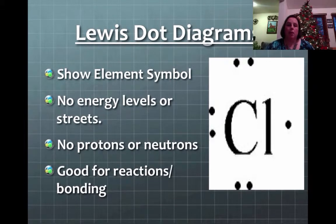They look like the picture that you have here. First of all, it shows the element symbol. It doesn't show any energy levels or any rings or streets or anything around them. It doesn't care about the protons or neutrons as well. And the only thing Lewis dot diagrams are really good for is they're good for reactions and bonding. They're really good to show you how things go together. This is going to become important in Unit 5.